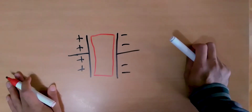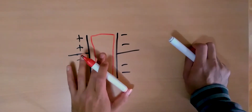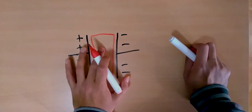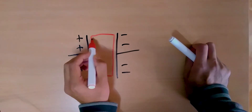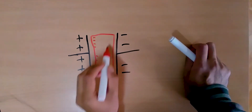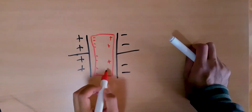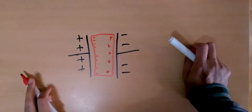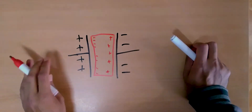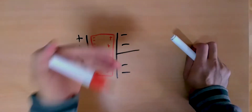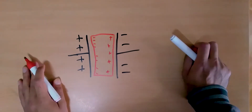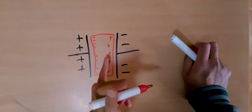We know that if we have a dielectric, due to the electric field between the two plates, the dielectric will get polarized. We'll have a small layer of negative charges on one side and a small layer of positive charges on the other side. But what happens if we keep increasing the charges on both plates, which means we are increasing the electric field between the two plates? As we increase the electric field, we get more and more polarization in the dielectric.